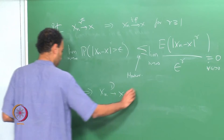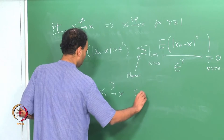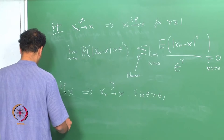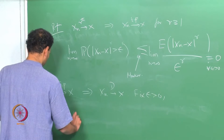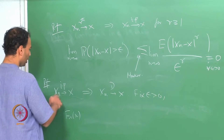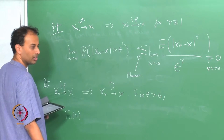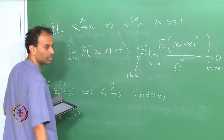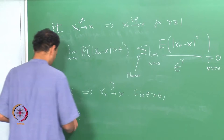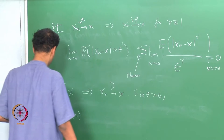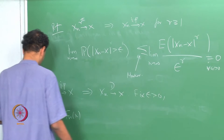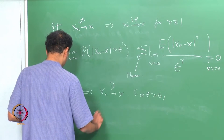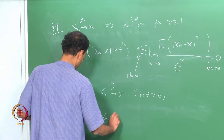Fix epsilon greater than 0. We assume convergence in probability holds and we have to prove convergence in distribution. So, F_n of X is equal to probability that X_n is less than or equal to X.